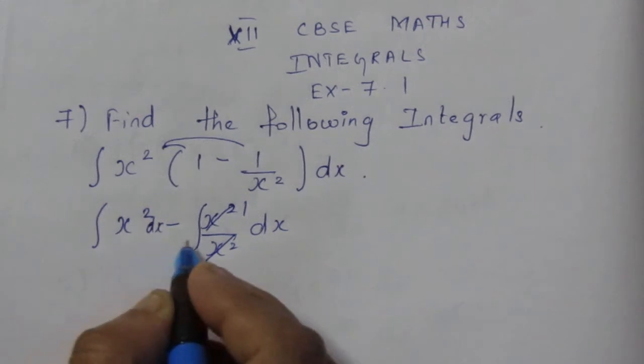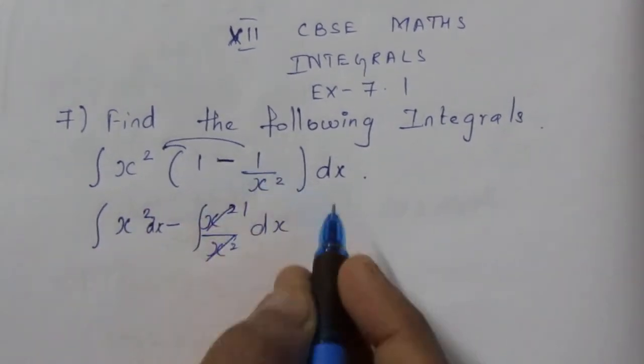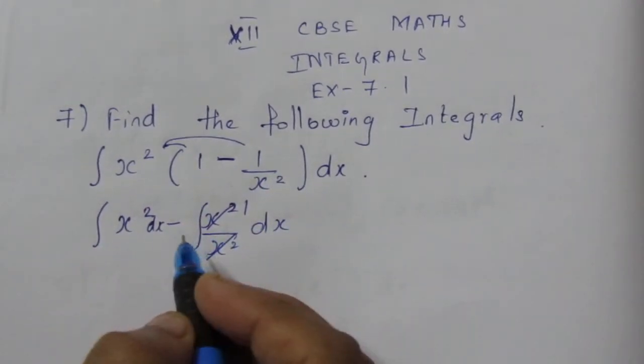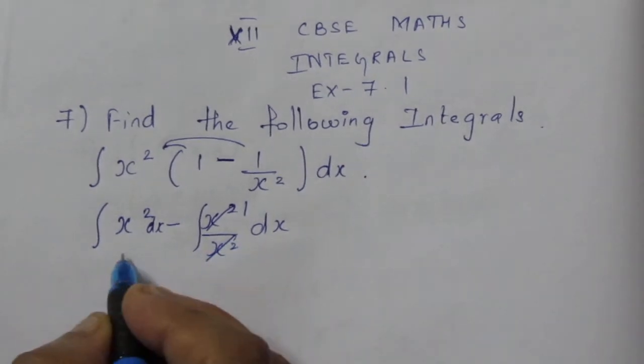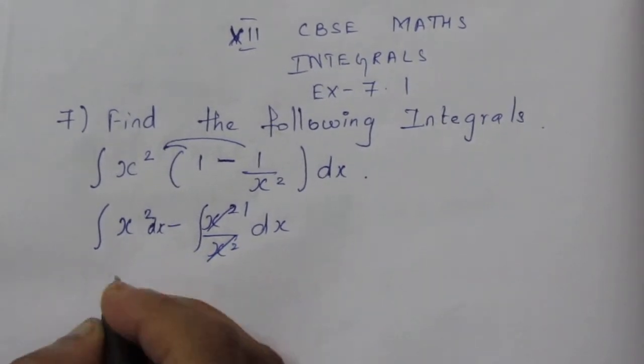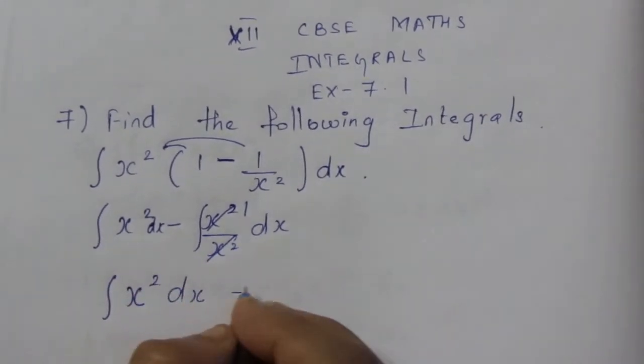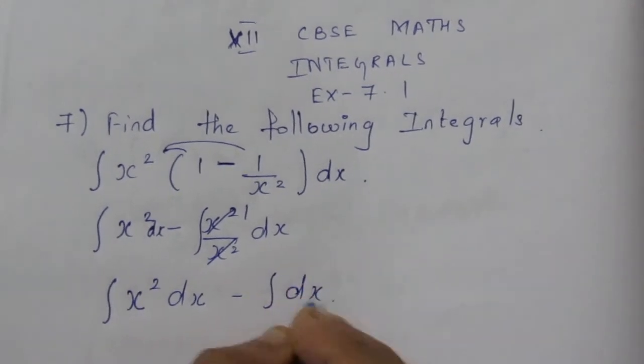Now as it is multiplication, if it is a minus or plus in between, we can separately do the integration. So I have also split it up. It becomes ∫x² dx minus ∫1 dx.